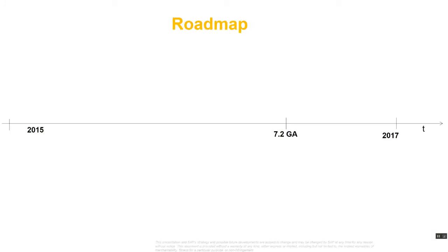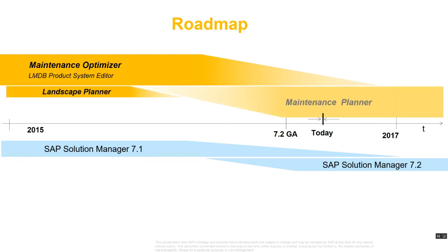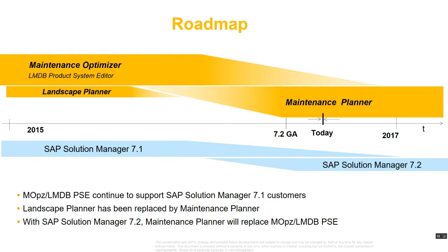Regarding the roadmap: Solution Manager 7.2 has been available for general use for a while, with the latest being support pack 4 and support pack 5 expected to be released in May. Solution Manager 7.1 will go out of maintenance in December 2017, so please plan accordingly and make sure you either upgrade or implement a new Solution Manager 7.2 as per your organization's requirements.